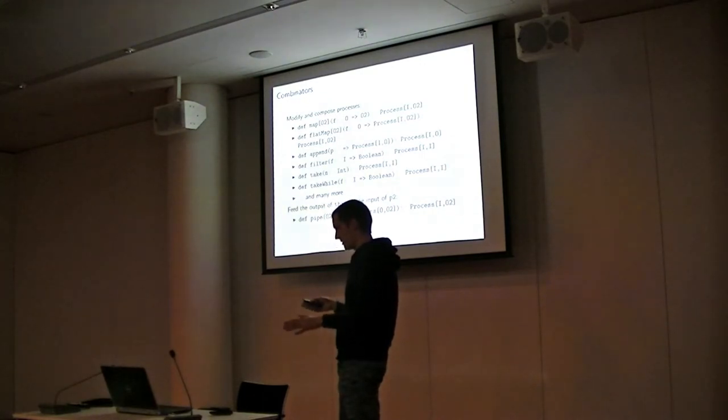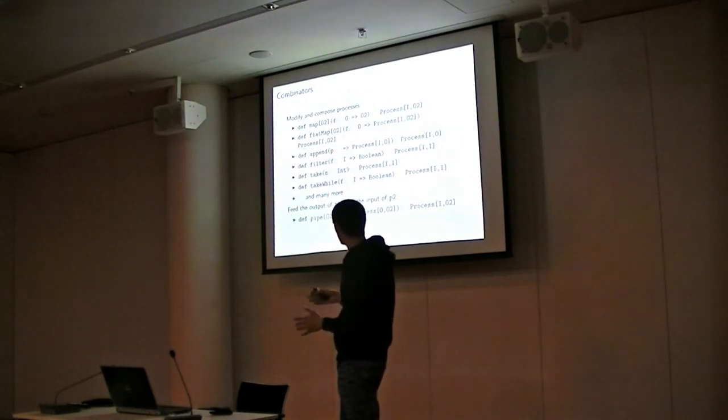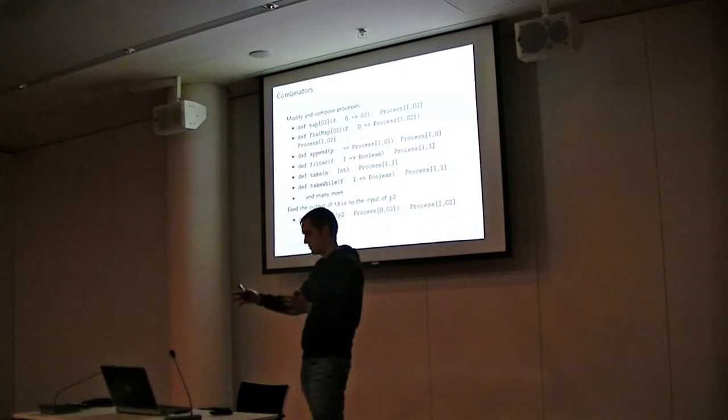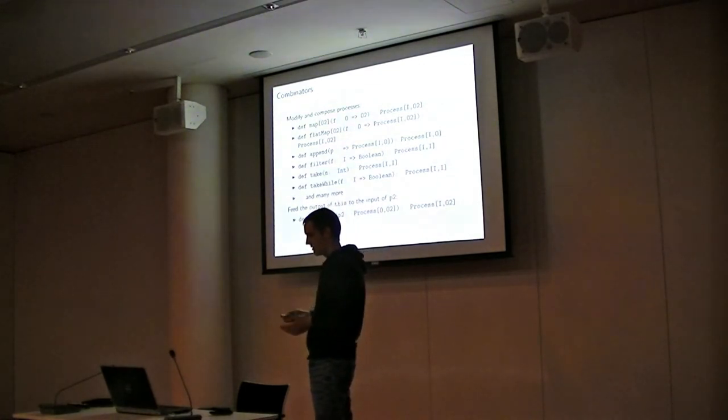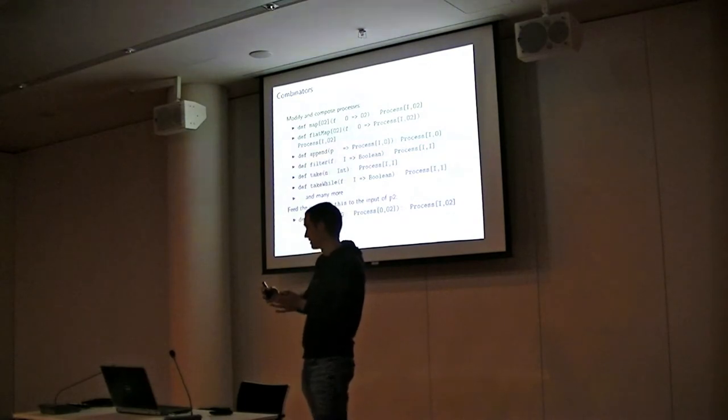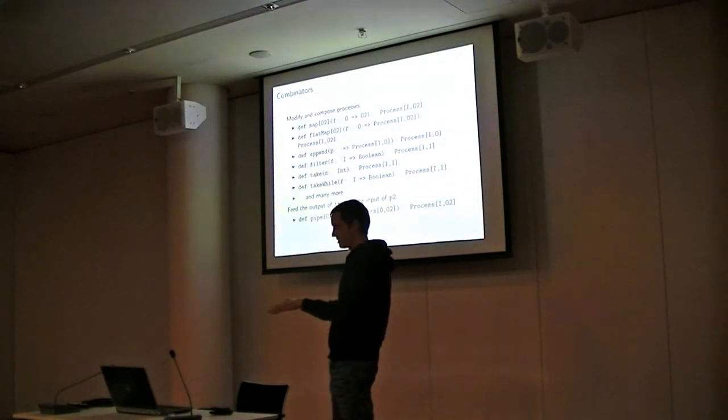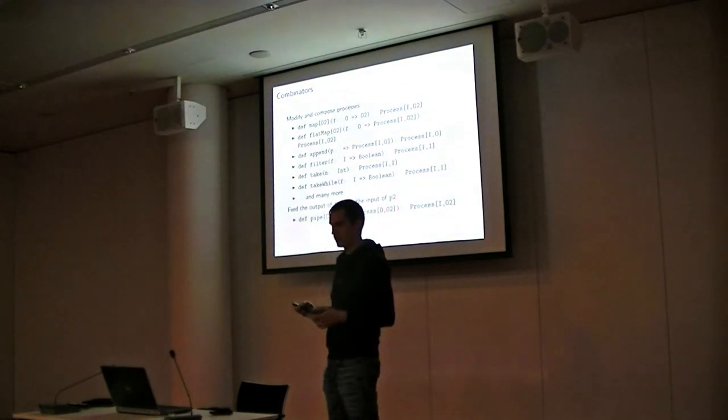The nice thing about this process is that you can define combinators or other methods on this type that change how the stream transformation is done. You can, for example, map over it, and then append two processes together so that one process runs until it halts, and then the next process runs until it halts. These functions are kind of similar to those functions you find on Scala collections—for example, map, append, take, and so on.